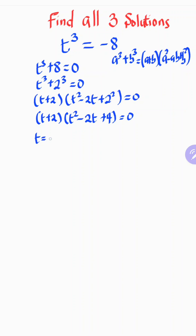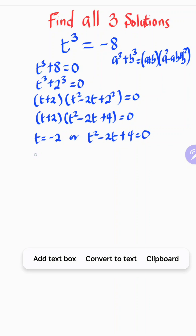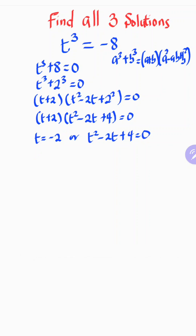Simplifying, we have t plus two, times t squared minus two t plus four, equals zero. Now we have two different equations: t equals negative two, or t squared minus two t plus four equals zero, which forms a quadratic equation.